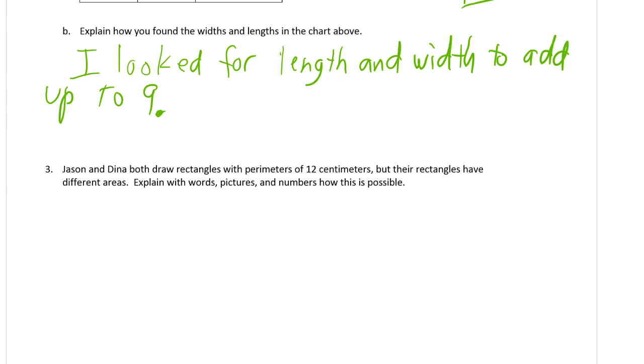So Jason, let's just make one up, right? It doesn't tell us what they are, so we have to make them up. Jason, we need a perimeter of 12. So that means the sides have to add up. The length and width have to add up to 6. So we could have 2 by 4. And then Dina could have one that's, she could have a square here.